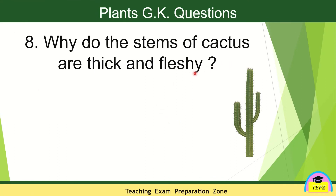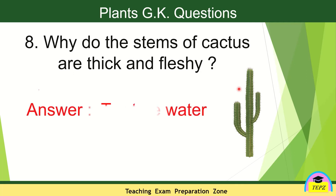Why do the stems of cactus are thick and fleshy? Look at the picture of cactus — you can see the stems are thick and fleshy and they also have thorns. Cactus has to survive in hot and dry climates where there is less water. So, the thick and fleshy stems are adaptations of cactus plants, so that they can store water whenever it rains. The cactus stores excess water in its thick stems and uses it whenever required. The thick and fleshy stems of the cactus help to store water.